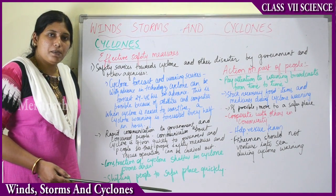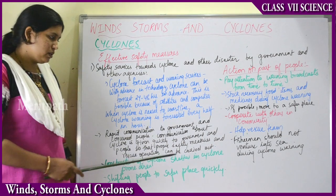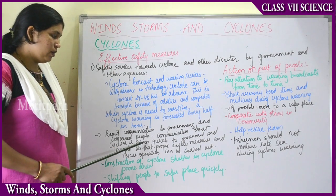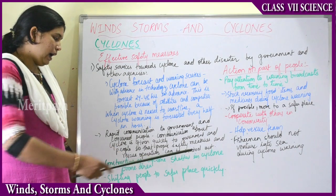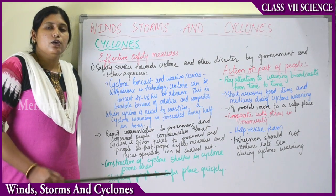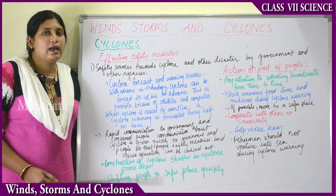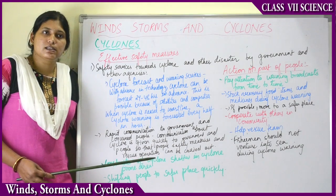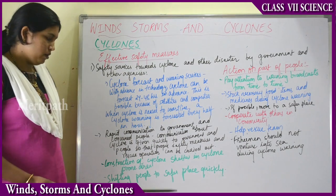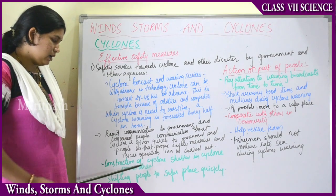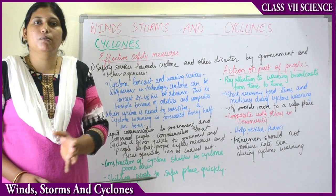The meteorological department communicates cyclone warnings quickly to the government and people so that proper safety measures and rescue operations can be carried out. As soon as a warning is issued, the government and people immediately take safety measures — stocking up medicines and keeping emergency phone numbers for police and fire rescue. The government also constructs cyclone shelters in cyclone-prone areas so people can move to safer places.